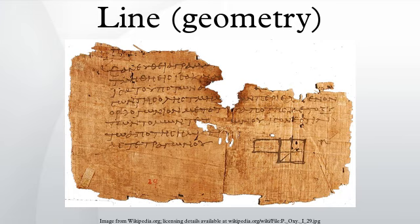Given a line and any point A on it, we may consider A as decomposing this line into two parts. Each such part is called a ray and the point A is called its initial point. The point A is considered to be a member of the ray. Intuitively, a ray consists of those points on a line passing through A and proceeding indefinitely, starting at A, in one direction only along the line.